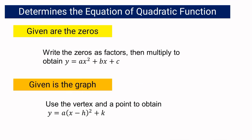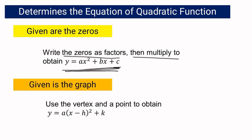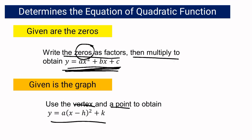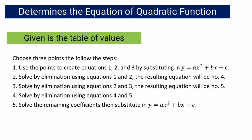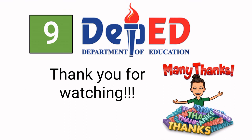In summary: if the given are the zeros, write them as factors and multiply using the FOIL method. Remember there is a family of quadratic functions with the same zeros. If the given is the graph, use the vertex and a point to obtain y equals a times the quantity x minus h squared plus k. If the given is the table of values, follow the step-by-step elimination method. That will be competency number 15. Thank you for watching.